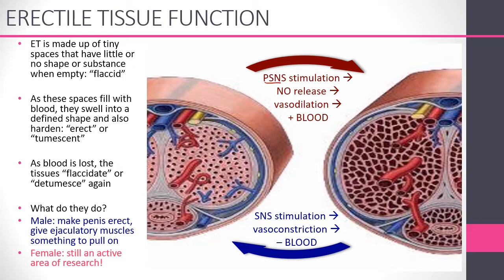The parasympathetic nervous system is stimulated, which releases nitric oxide — that leads to vasodilation, so blood fills all of these spaces. As the blood fills these spaces, the tissue swells and hardens. When the sympathetic nervous system is stimulated for a long enough time, vasoconstriction occurs, blood leaves the tissue, and it becomes flaccid or detumescent again.